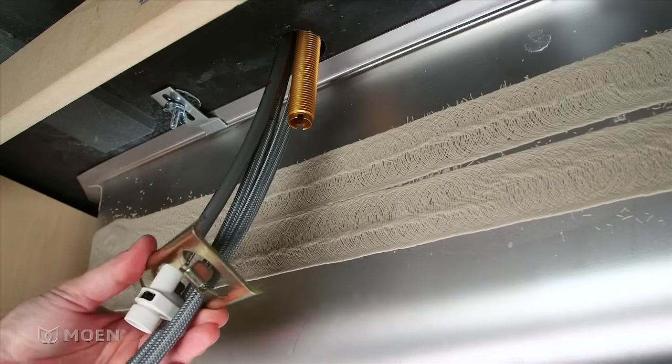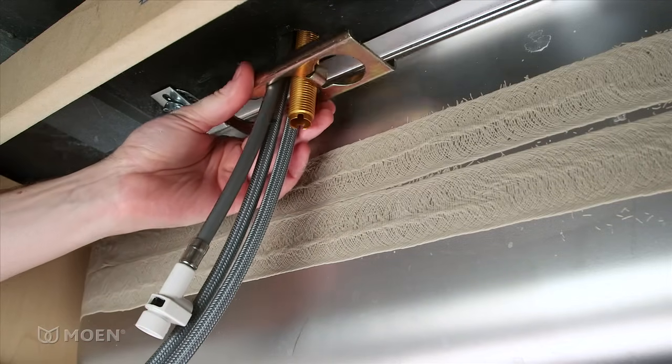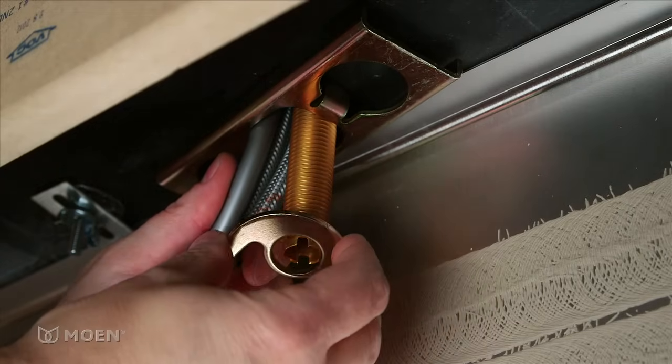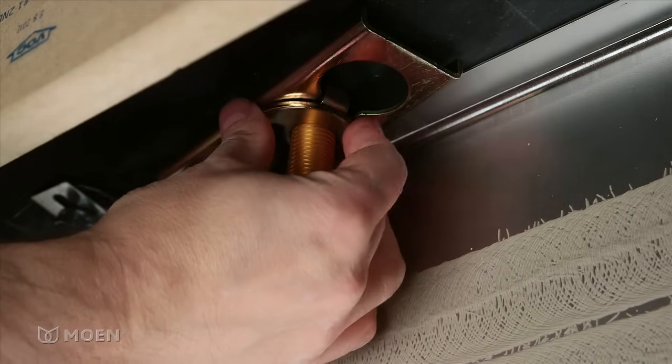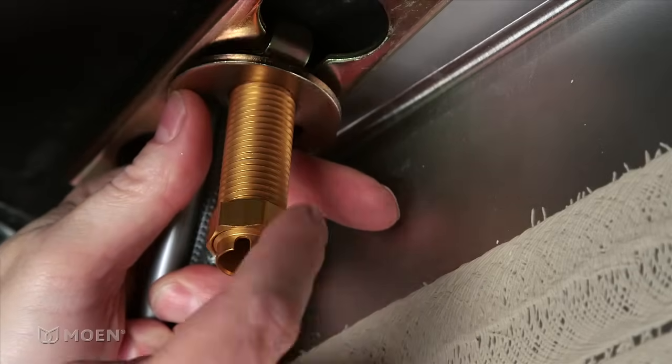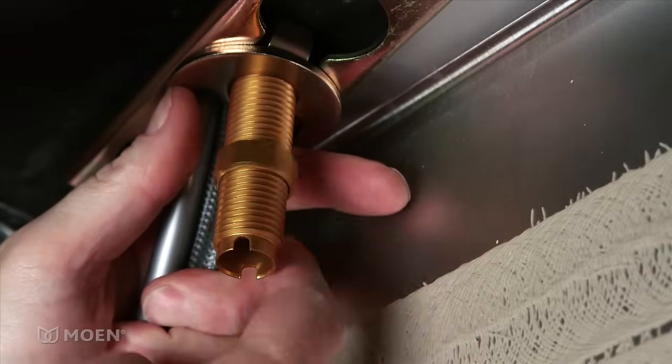Underneath your countertop or sink, slide the support bracket over the hoses and faucet shank. Then slide the mounting washer onto the faucet shank. Make sure the hoses are in the curve of the washer. Thread the mounting nut onto the faucet shank with your fingers.